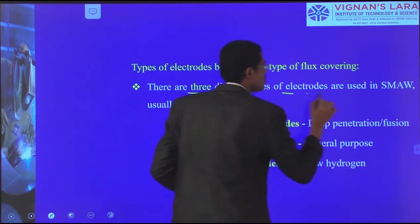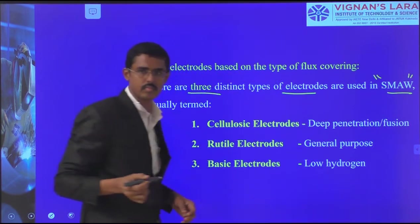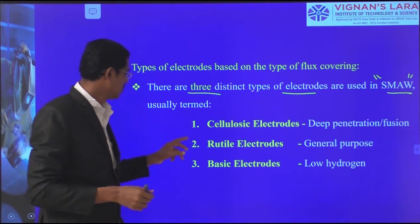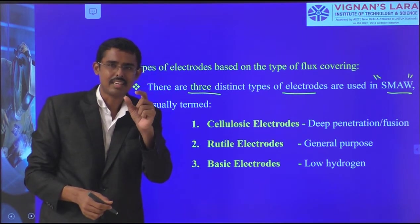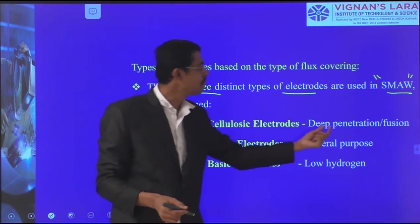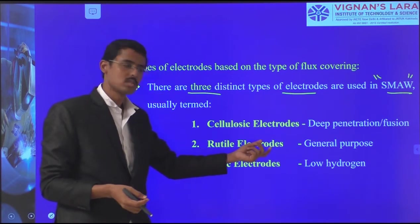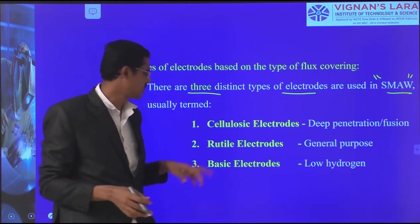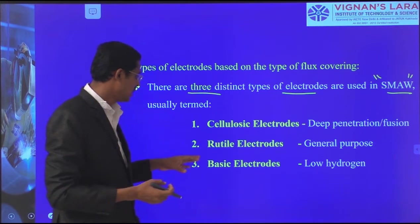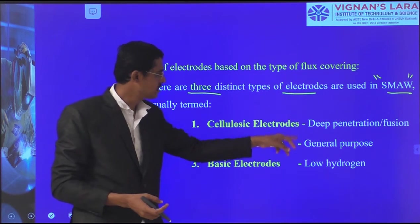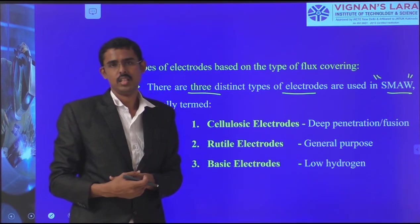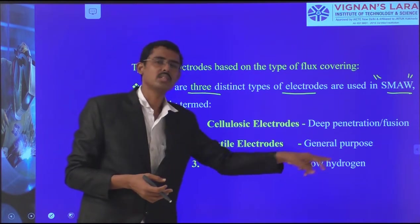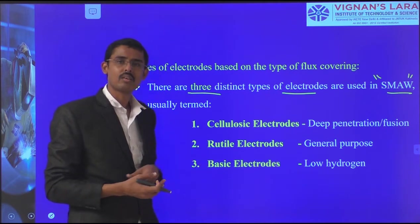There are three distinct types of electrodes used in the SMAW process. The cellulose electrode is used mainly for deep penetration. Rutile electrodes are general-purpose and can be used for vertical, horizontal, and all positions. Basic electrodes are used to avoid hydrogen absorption defects — the hydrogen embrittlement problem that occurs with the other two — making low hydrogen content an advantage of basic electrodes.